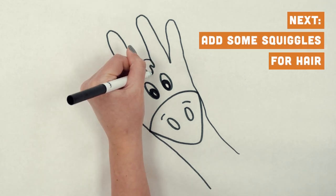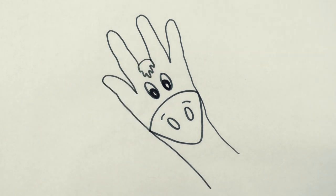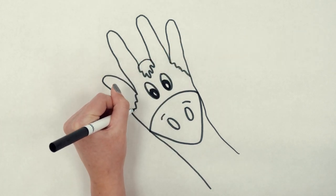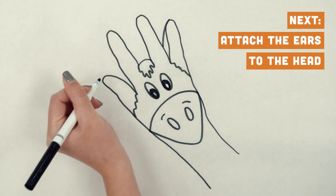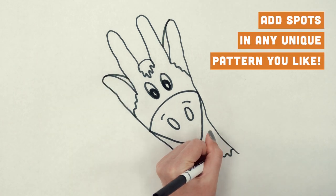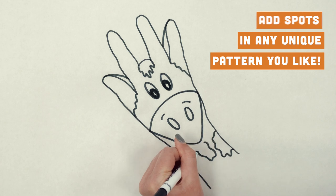Next, add hair. Add some squiggles at the top and squiggles on the sides to indicate ears. Next you're going to attach the ears to the head and add spots. These can be any pattern you like.